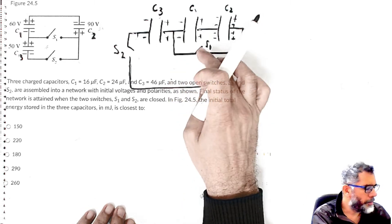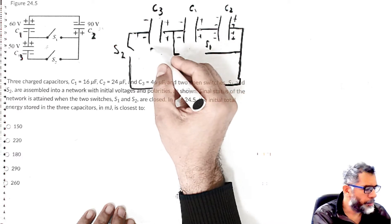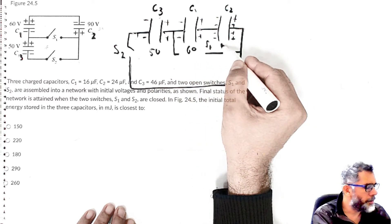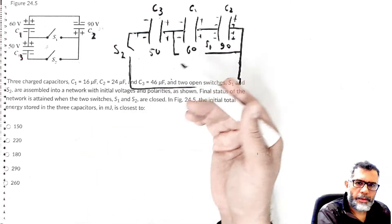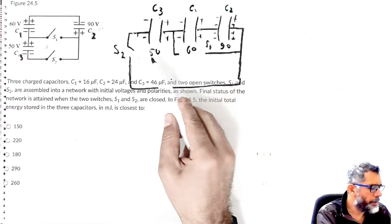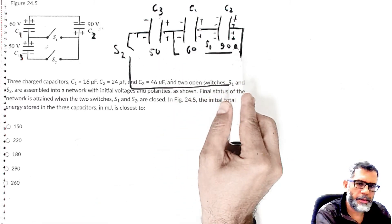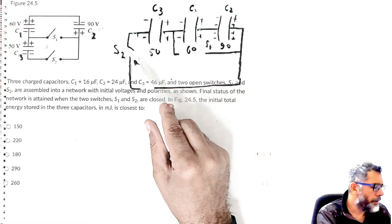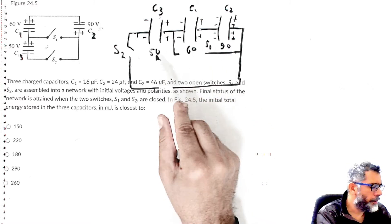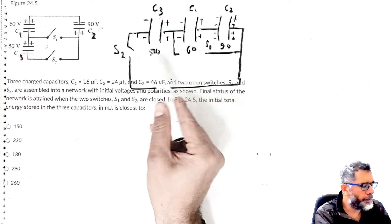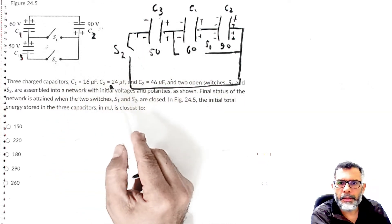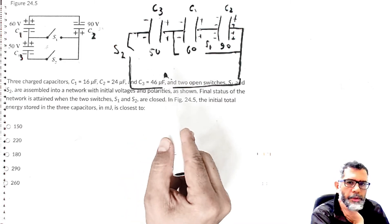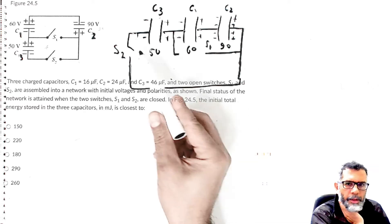Putting the voltages on the diagram: C3 is 50 V, C1 is 60 V, and C2 is 90 volts. This is the property of the serial connection — every capacitor in a serial connection might have different potentials, and the polarities are consistent. This is a perfectly acceptable serial connection with the associated potentials. Once you have these potential differences and the given capacitances — C1 is 16 microfarad, C2 is 24 microfarad, C3 is 46 microfarad — you can easily calculate the total energy.